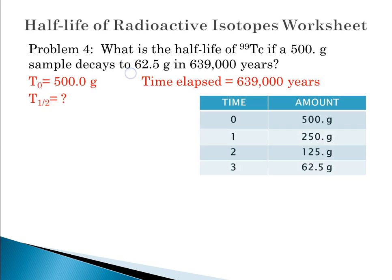So now we're going to set up our little chart, and we're going to start with the amount that we were given and keep dividing by 2 until we get to 62.5 grams. So you can see I've done that for you. At time zero, we had 500 grams. After a decay takes place, we should have 250 grams left. After another decay, 125, and after another, we'll have 62.5 grams left. And eureka, 62.5 is how much they told us. So now we know that three decays took place over a period of 639,000 years.